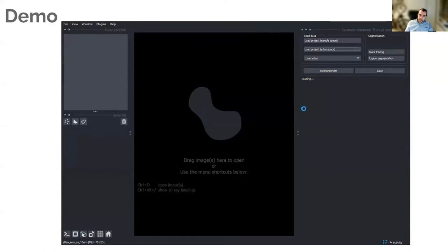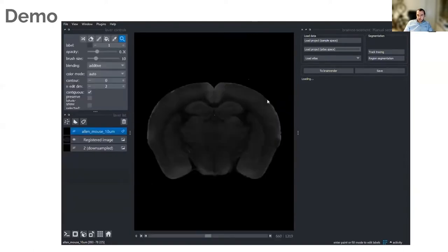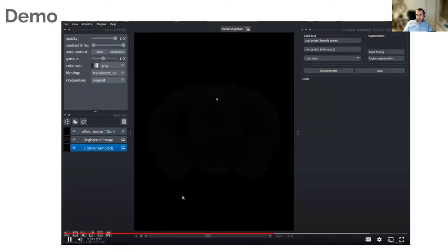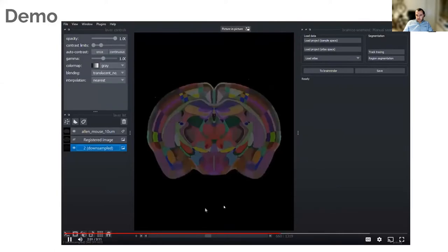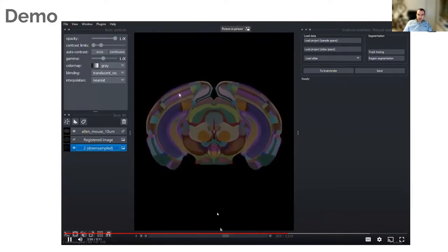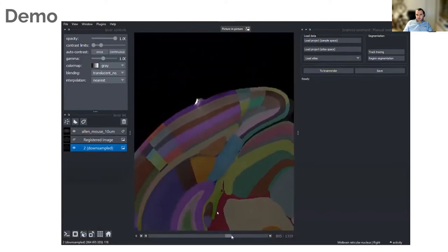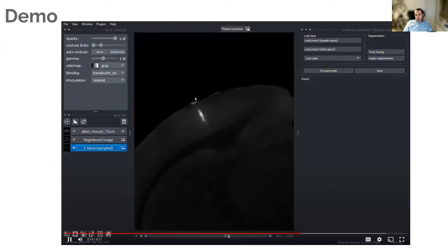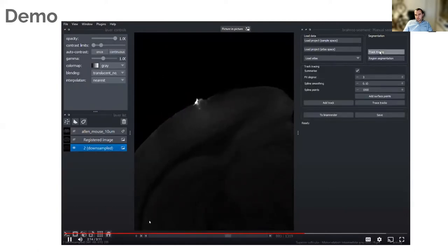We'll reload the same data back in. The only difference is everything will be warped to the Allen reference frame, to the CCF, which is why you should see that the brain is a slightly different shape now, and it's perfectly symmetrical and perfectly aligned. But the data is still the same data. It's fine for these shape-based analyses, but you wouldn't do any sort of fluorescence intensity quantification. Here we can see the probe track again through visual cortex. And we have two different panels, one for region segmentation and one for track tracing, which is for one-dimensional tracks that you want to trace through the brain—in this case, Neuropixels probes.